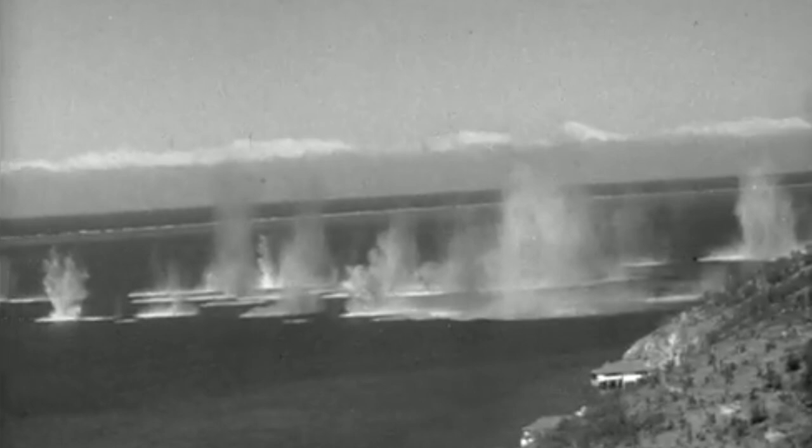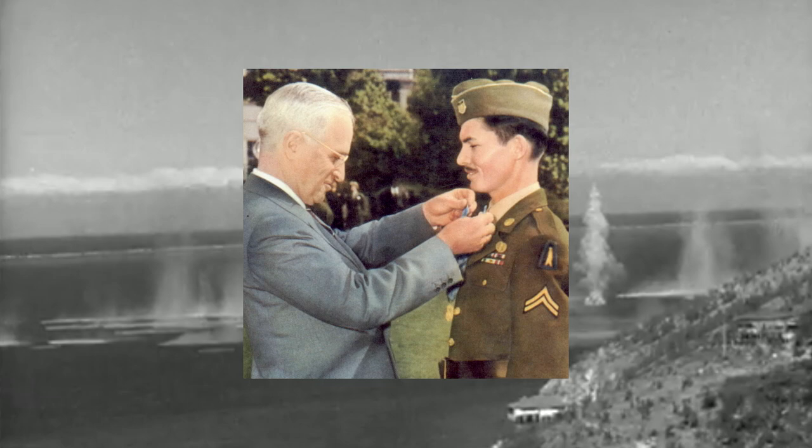Through his outstanding bravery and unflinching determination in the face of desperately dangerous conditions, Private First Class Doss saved the lives of many soldiers. His name became a symbol throughout the 77th Infantry Division for outstanding gallantry far above and beyond the call of duty.